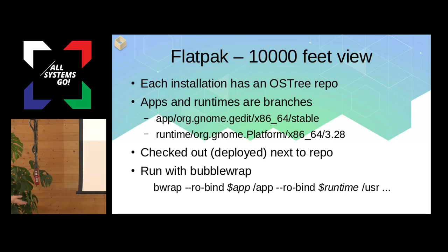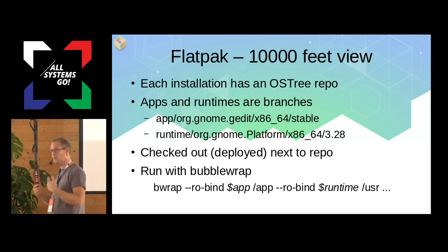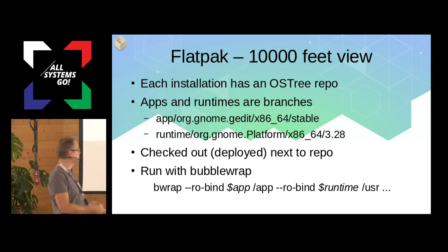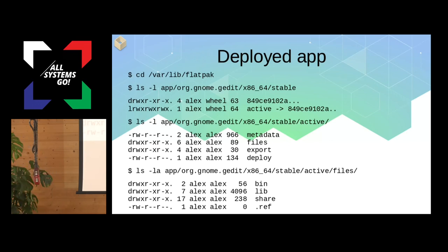In Bubblewrap, we put the files from the app in /app and the runtime in /usr — all read-only mounts. We also set up /tmp, /proc, /dev, and other standard stuff. You can also request access to regular filesystem paths — if you want home directory access, we add a bind mount of the home directory. If you look at a deployed app in /var/lib/flatpak, there's a repo directory with the repository, plus a directory named after the full ref, containing the actual checkout under its own commit ID and a symlink called 'active' pointing to it.